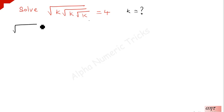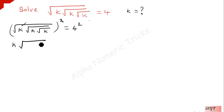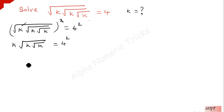Squaring on both sides of the given problem: square root of k under root k under root k, the whole square is equal to 4 squared. This square root and this square get cancelled, so k times square root of k under root k is equal to 4 squared. Don't simplify this term because later our simplification becomes easy.